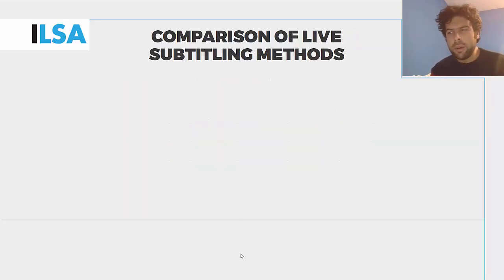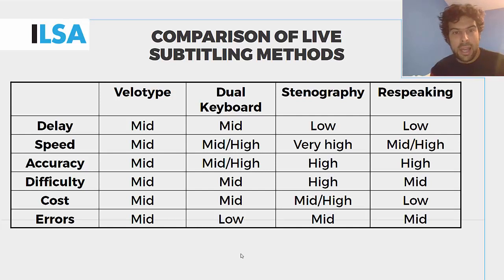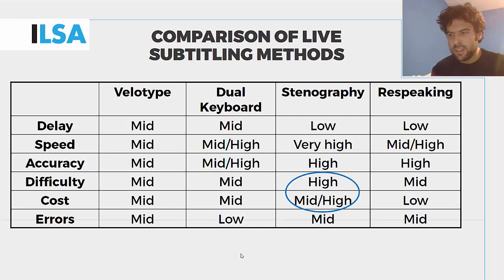Comparing the different live subtitling methods is useful to see what parameters are important in live subtitling quality, including delay, speed, accuracy, difficulty, cost, and errors. Later, we will see that errors and delay are the key elements that determine how re-speaking is approached in every country.